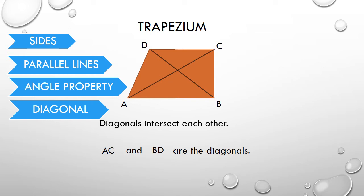So, a trapezium, if it has four sides and has only one pair of parallel lines, and sum of all its interior angles is equal to 360 degrees, and has two diagonals which intersect each other inside the figure, then it is known as a trapezium.